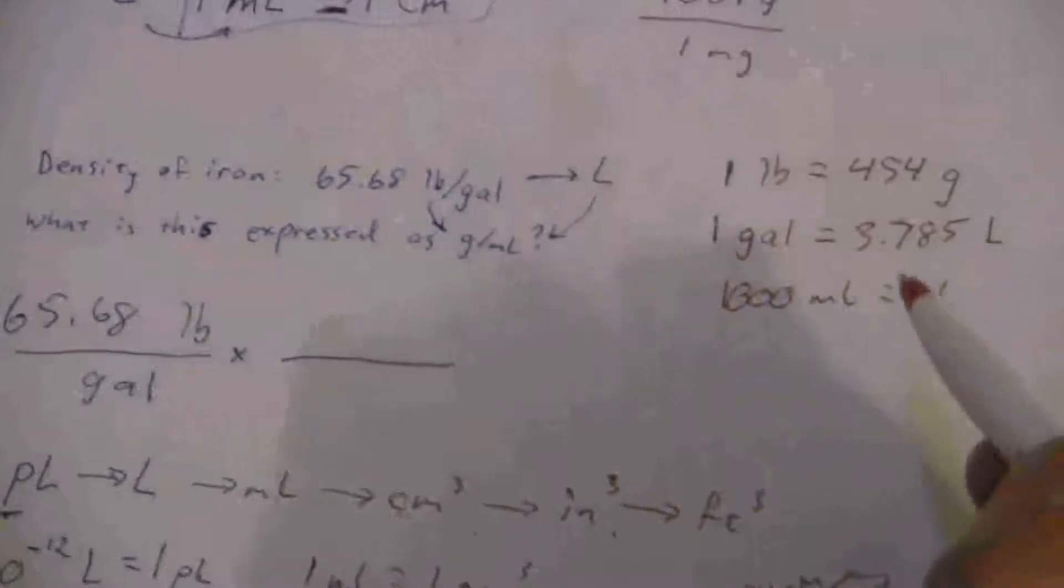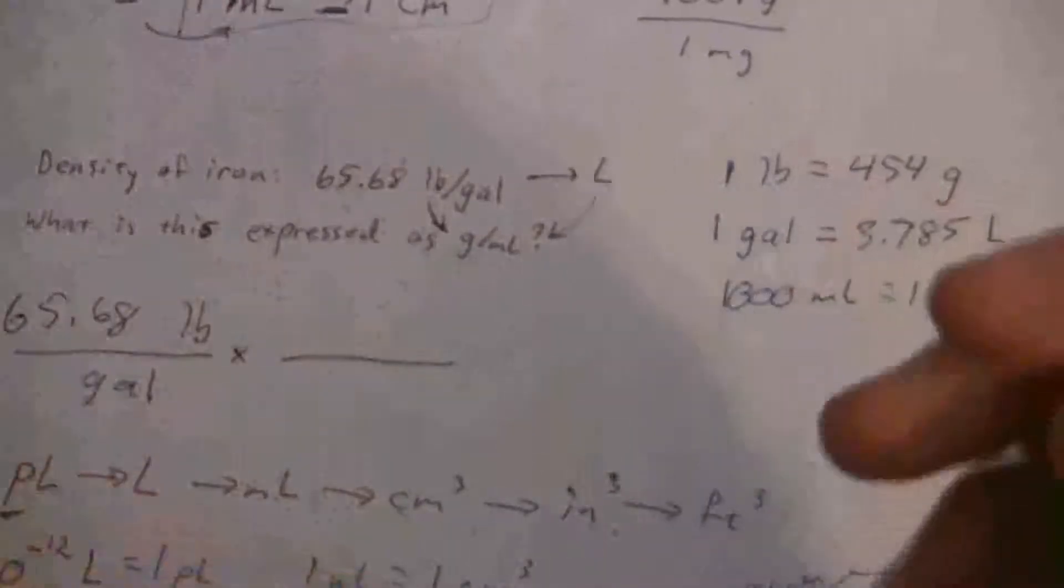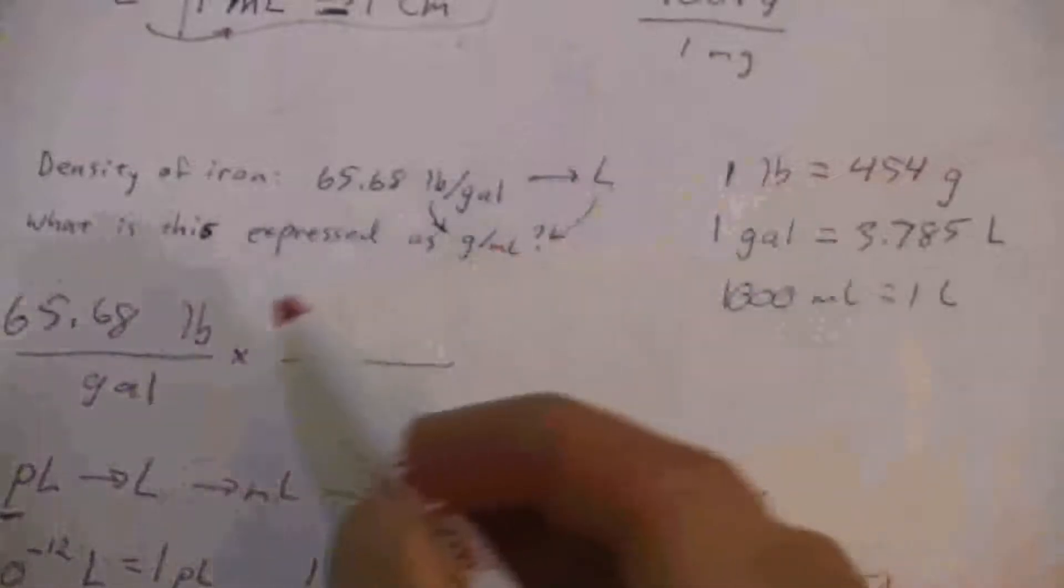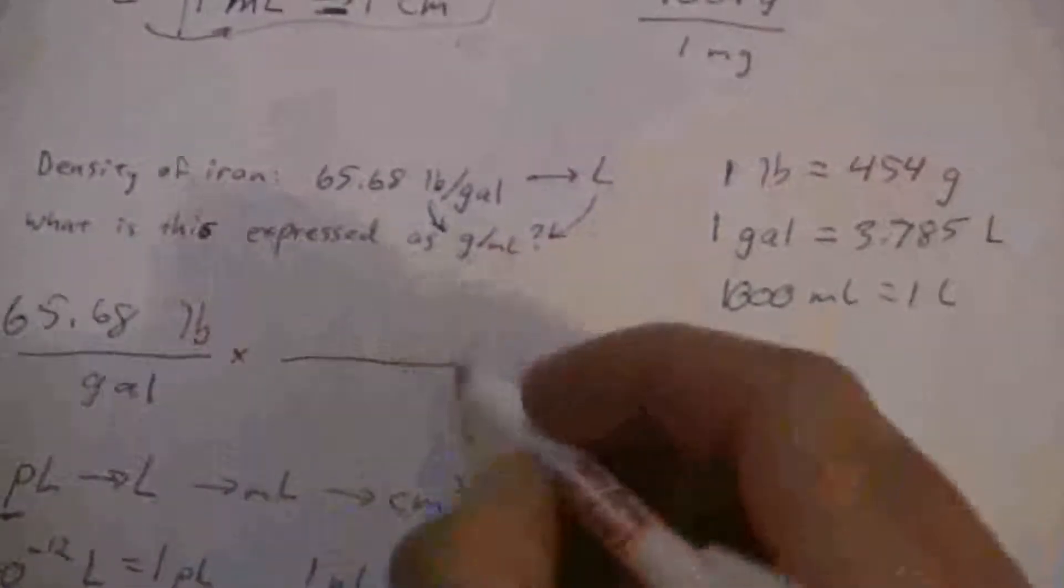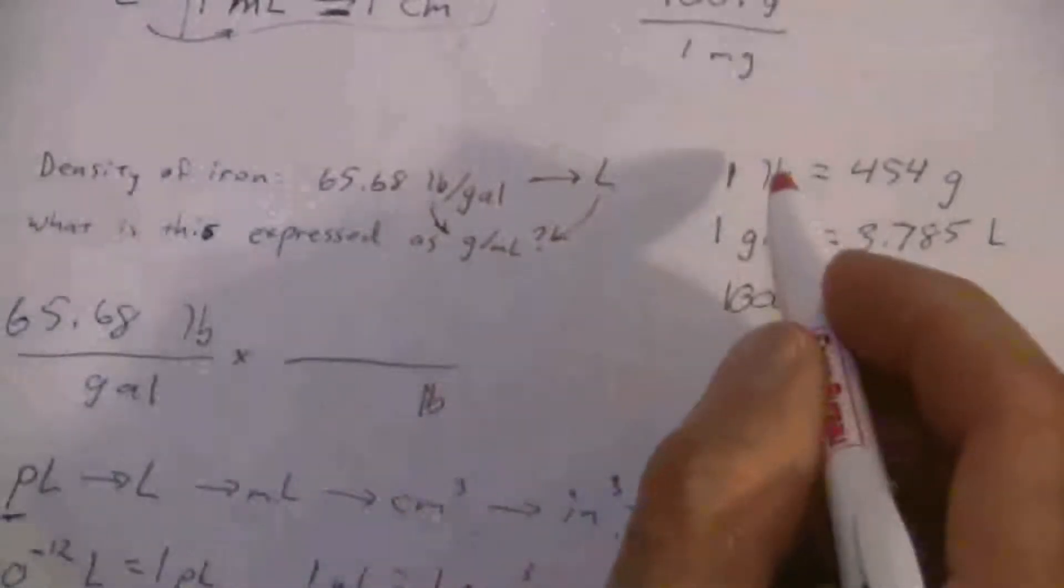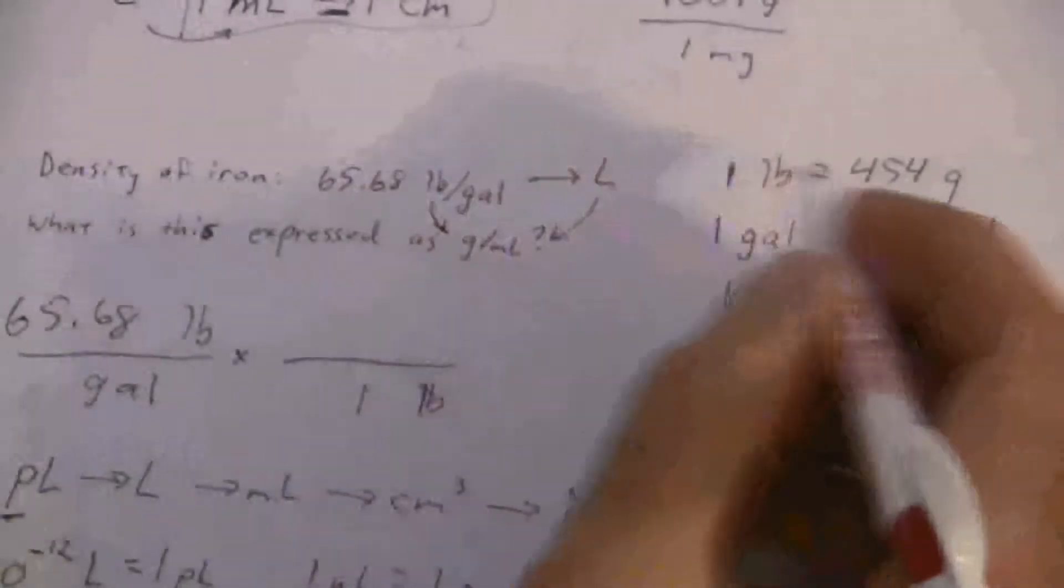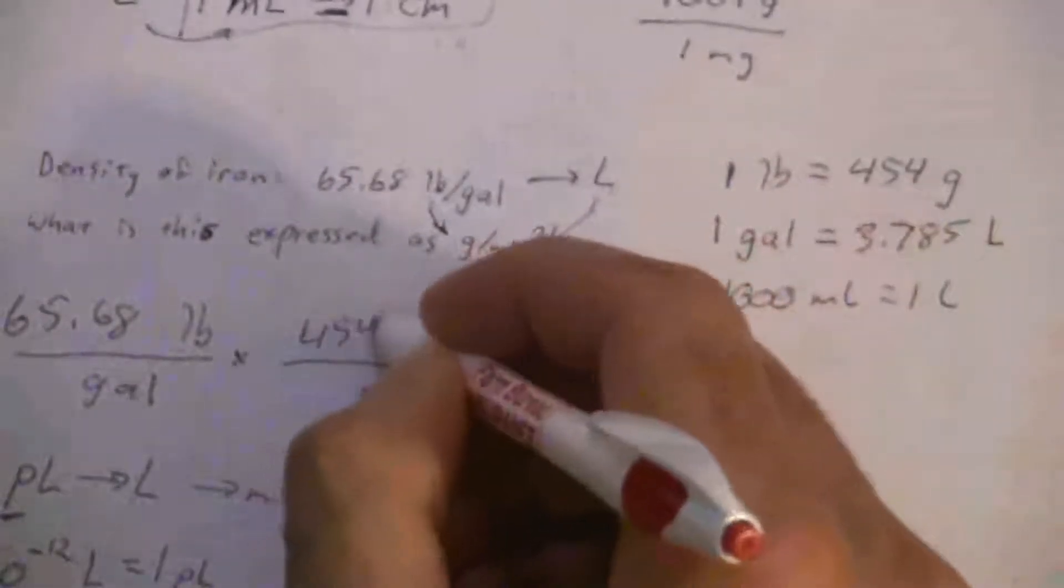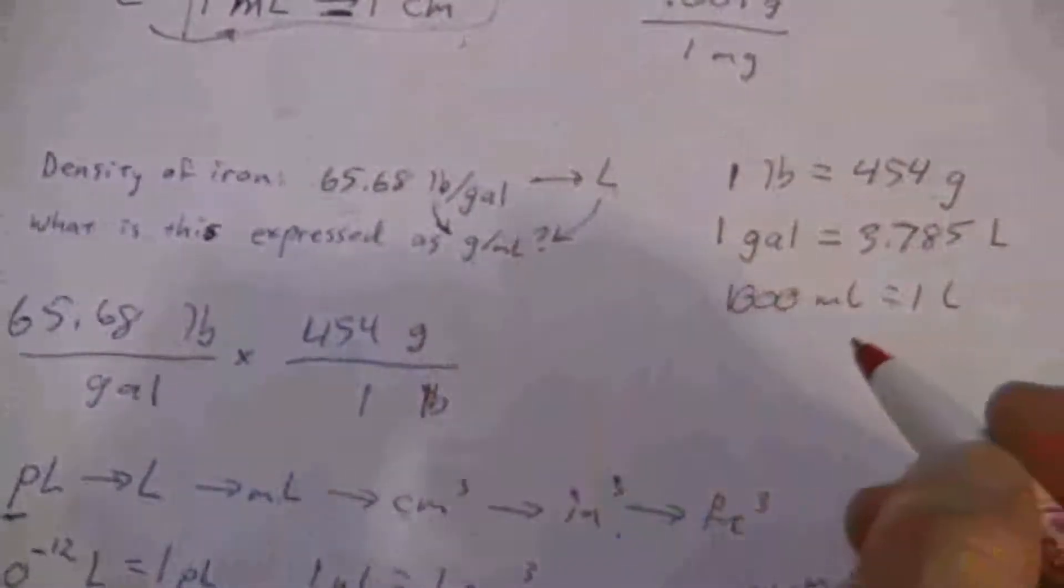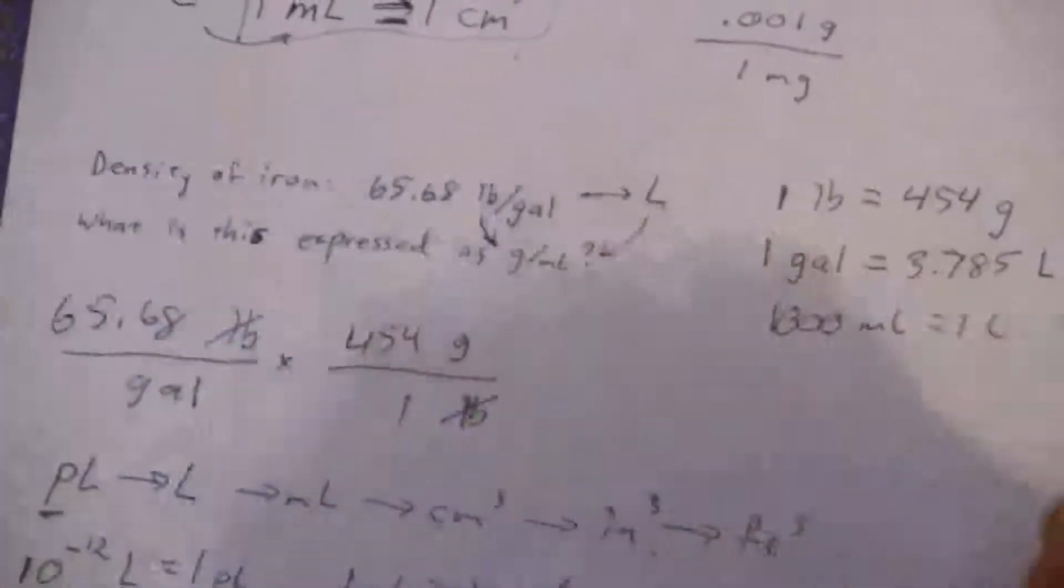First let's convert the pounds - it doesn't matter what we do first but let's do the pounds first. So I'm going to put this one in. Remember the interlocking train car, I have to get those units to be on the opposite sides. So pounds must be on the bottom there. One pound is 454 grams.